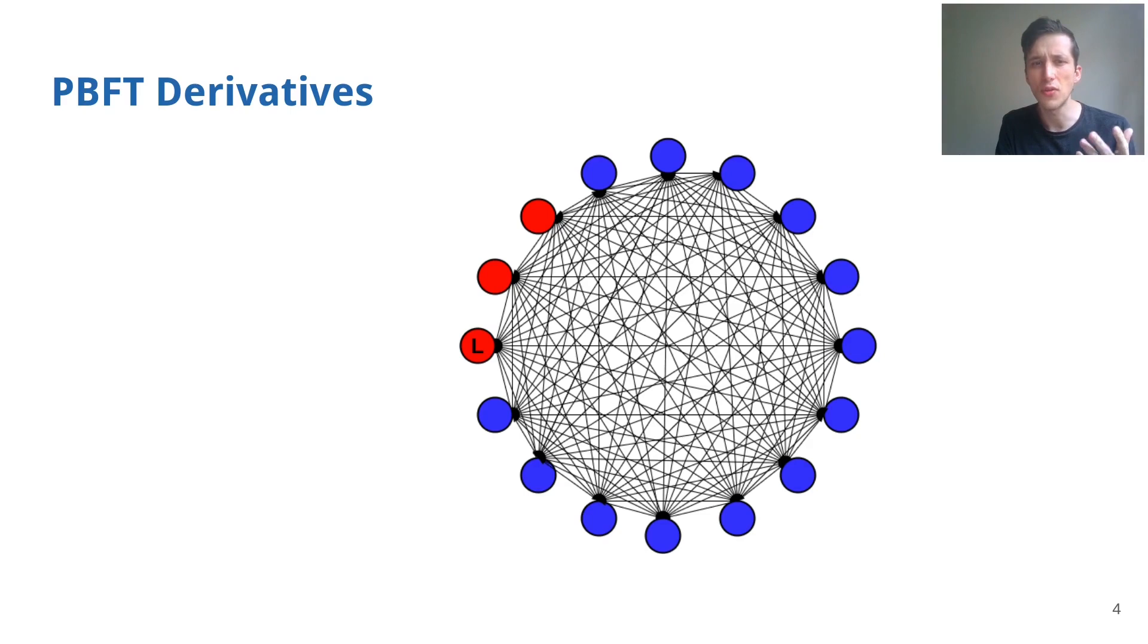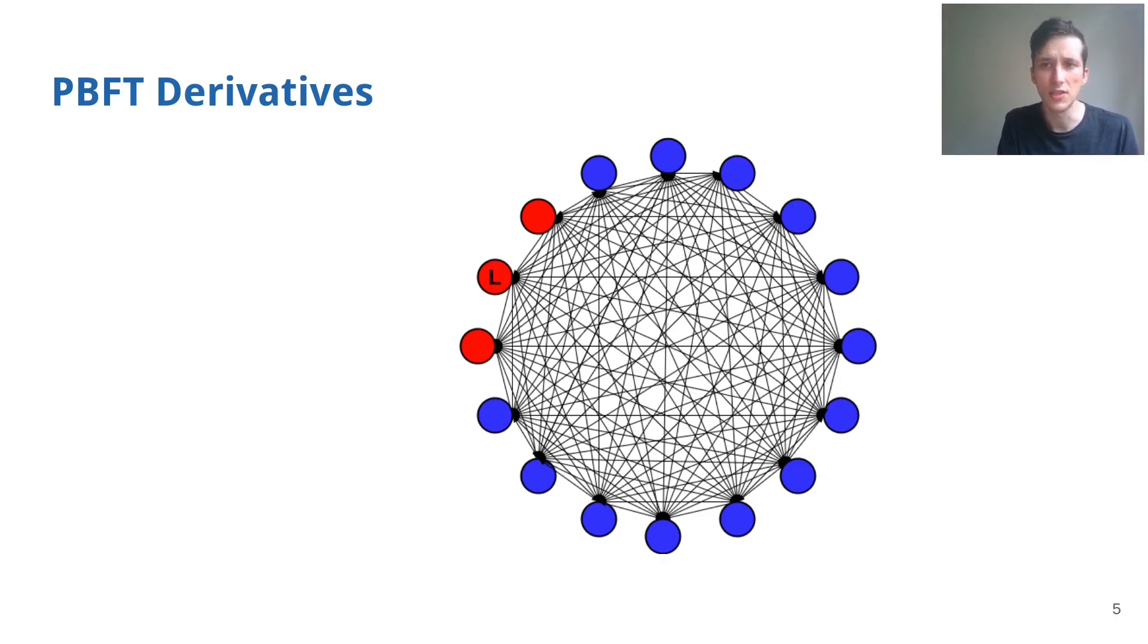pBFT uses an all-to-all scheme where the leader broadcasts a block proposal following several rounds of broadcast to collect two subsequent quorums. In the case of a failure, after a timeout a reconfiguration, also called a view change, is started and the leader is switched until a correct process is reached.